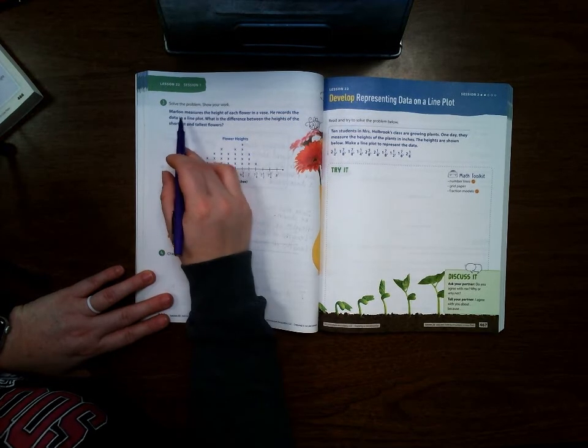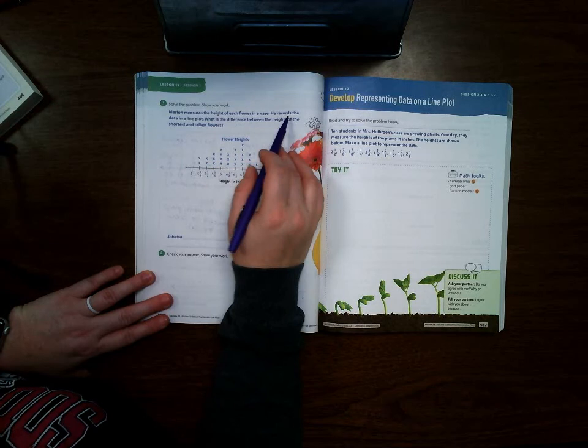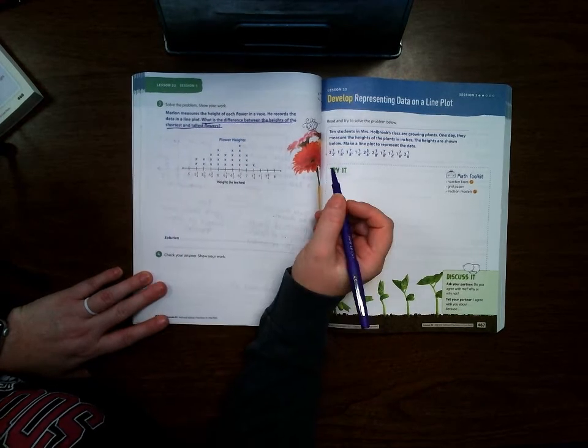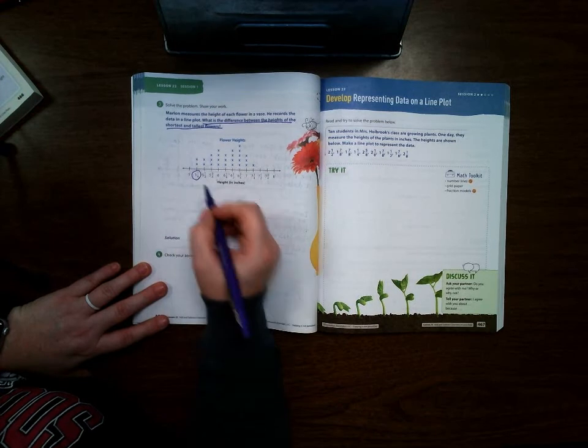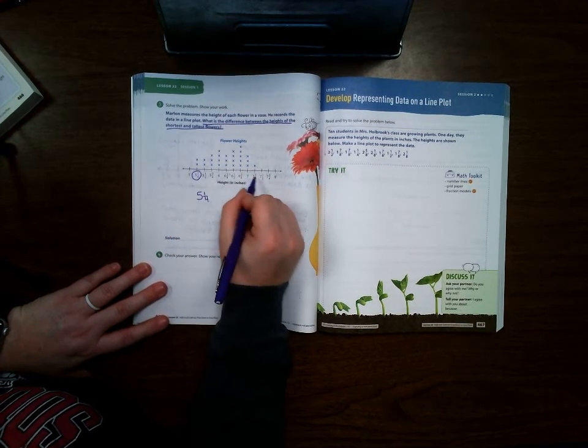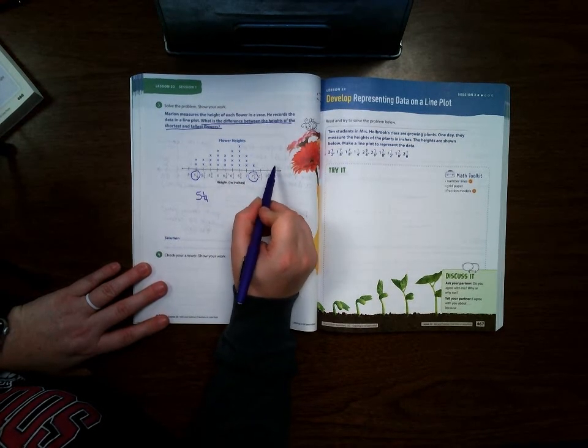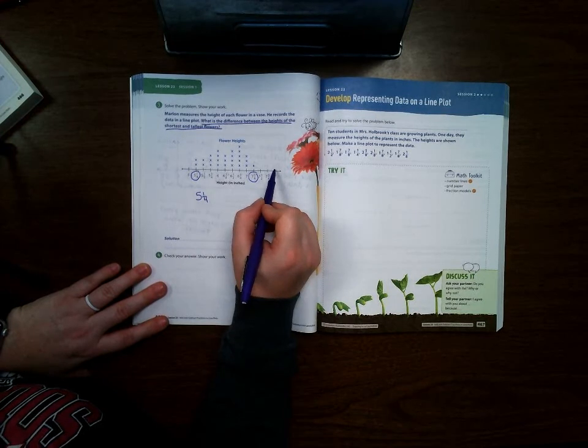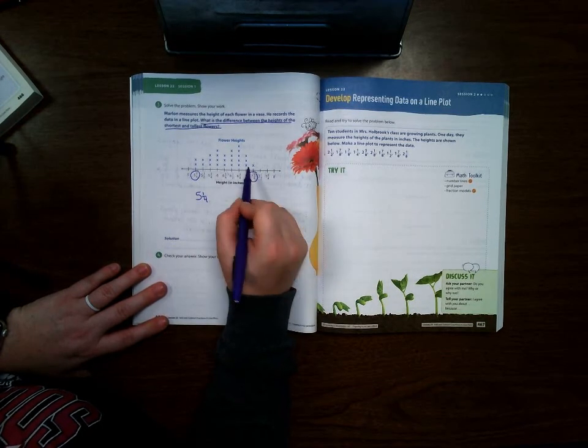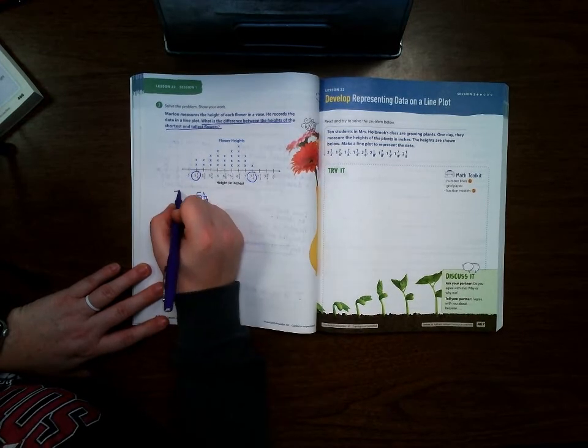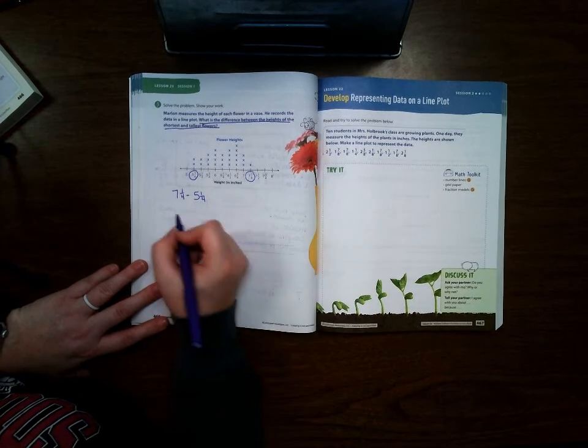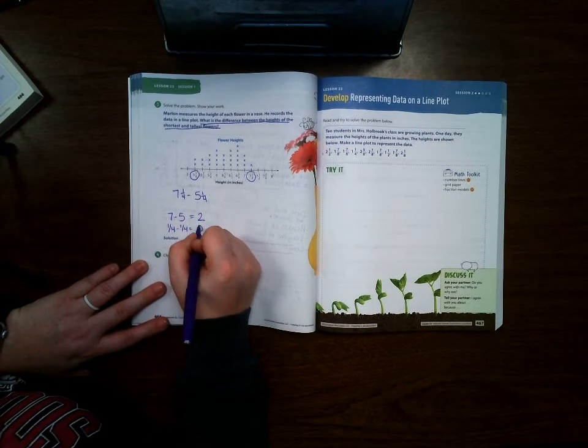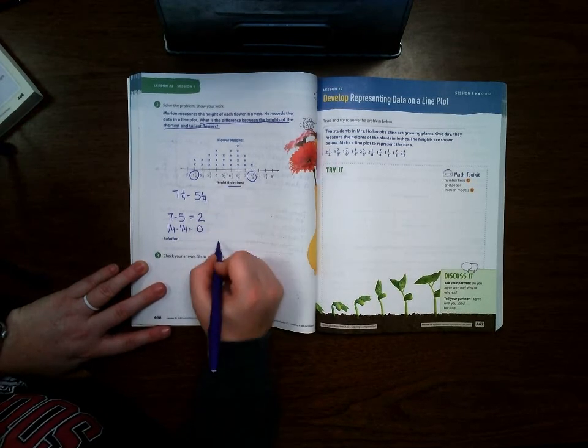Solve the problem. Show your work. Marlin measures the height of each flower in a vase. He records the data in a line plot. What is the difference between the height of the shortest and tallest flowers? So here, this is the shortest flowers, and then this is the tallest flowers. You wouldn't go to eight because there's no x's above eight. So you would have seven and one fourth minus five and one fourth. So we're going to do seven minus five, which is two, and one fourth minus one fourth, which is zero. So the difference is two inches.